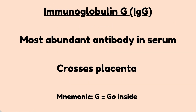Immunoglobulin G is the most abundant antibody in serum or blood, and it can cross the placenta — in fact, it is the only immunoglobulin that can cross the placenta. In order to remember this type, remember the phrase 'go inside': G stands for immunoglobulin G, and 'go inside' means it's the only one that can go inside or cross the placenta.